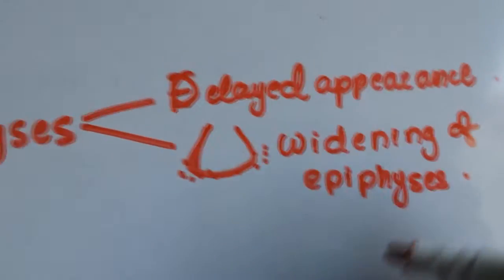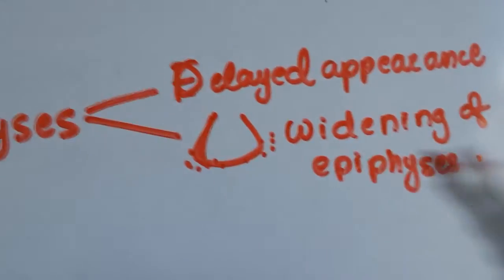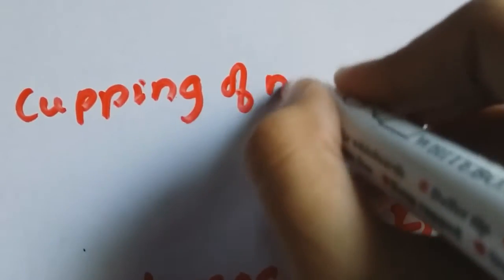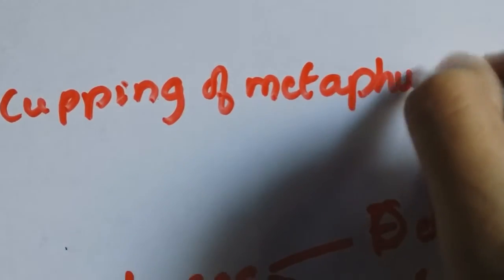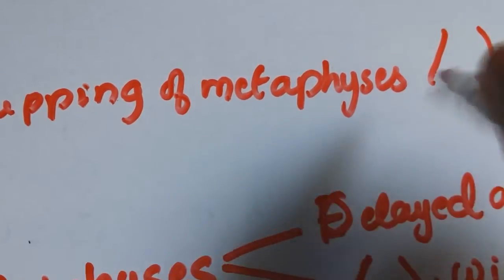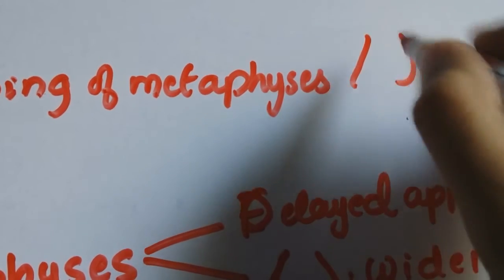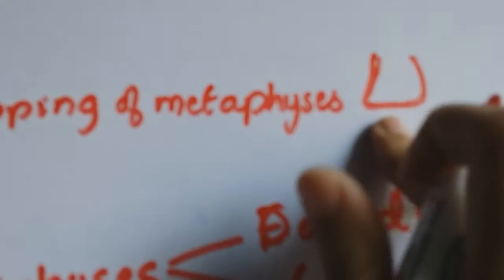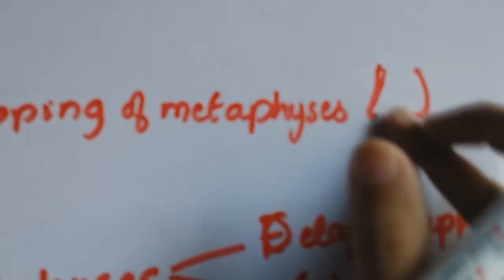Now we are going to talk about the metaphyseal manifestations. There is cupping of metaphyses seen in Rickets and this is because there are a lot of cartilage cells which are proliferating around the epiphyseal junction.